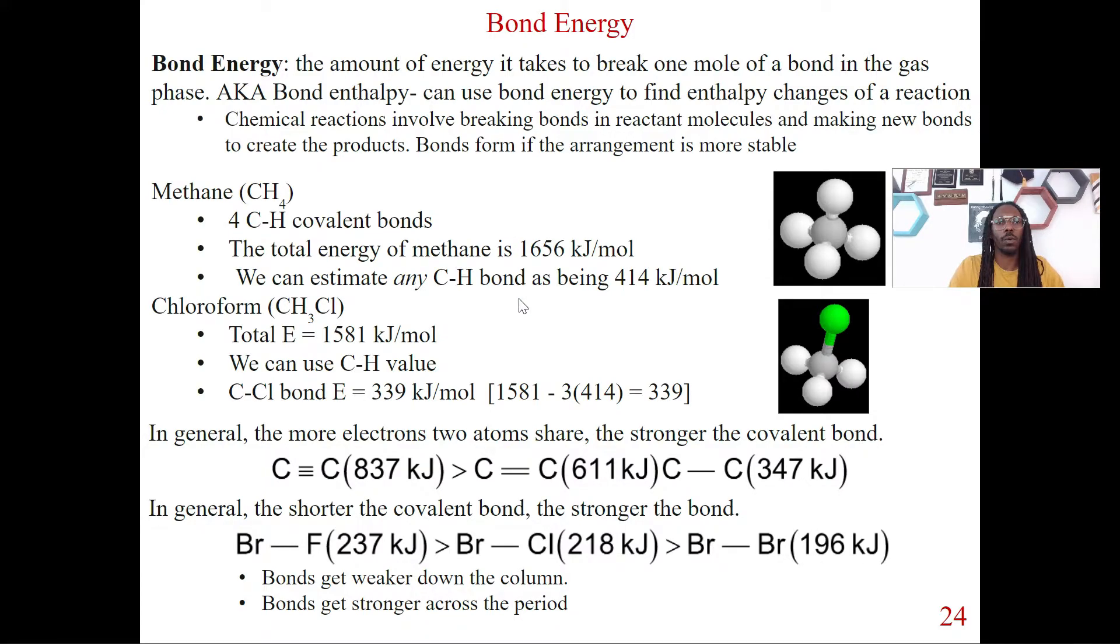Okay, so we can estimate any CH bond based on this fact. So in this case, if we wanted to, we could just divide it by four, and that's how we get 414 kilojoules per mole for this particular CH bond. But if we look at chloroform, it's going to be a little bit different. These are CH bonds, three of them in fact, but we have this carbon to chlorine bond.